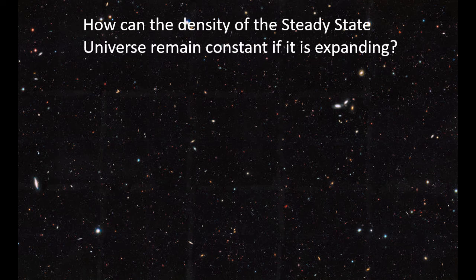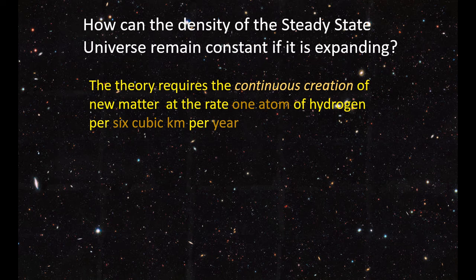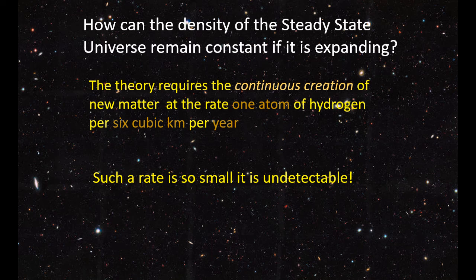In the Steady State Theory, even though the universe is expanding, its overall density remains constant. The theory achieves this by assuming that new matter is continuously created out of literally nothing at the incredibly small rate of one atom of hydrogen per six cubic kilometers of space per year. This matter eventually forms new stars and new galaxies, and if we take a large enough region of space, the density, which is the amount of matter in a given volume, doesn't change over time.